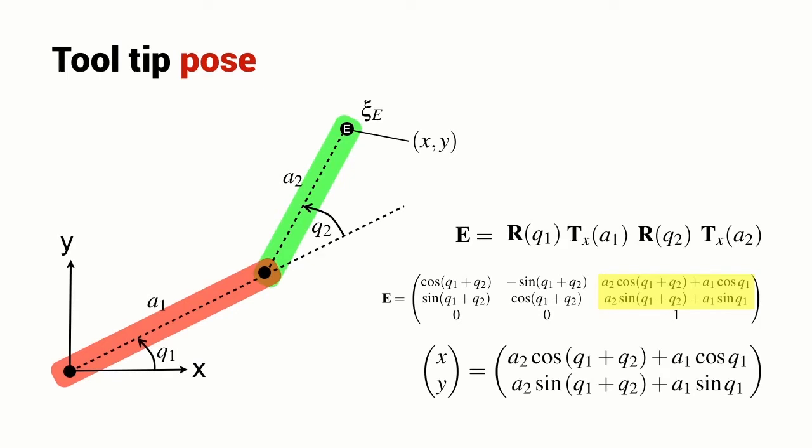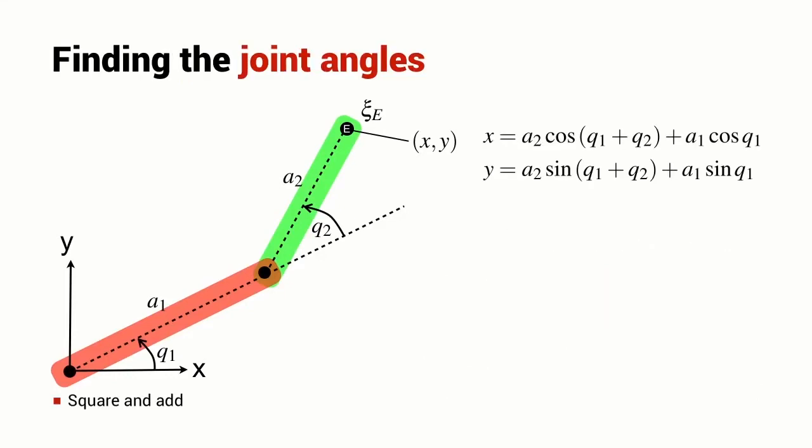So I'm going to copy those out. So here again is our expression for X and Y. And what we're going to do is a fairly common trick. We're going to square and add these two equations. And I get a relationship that looks like this.